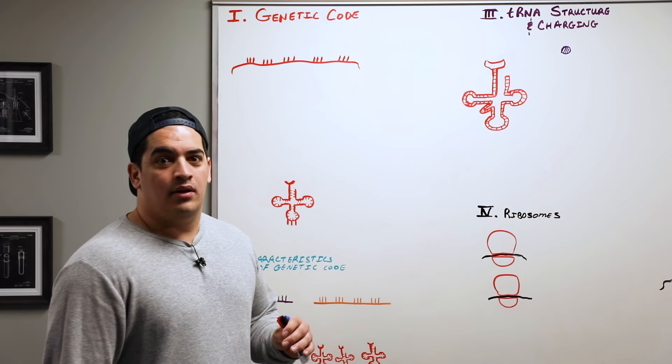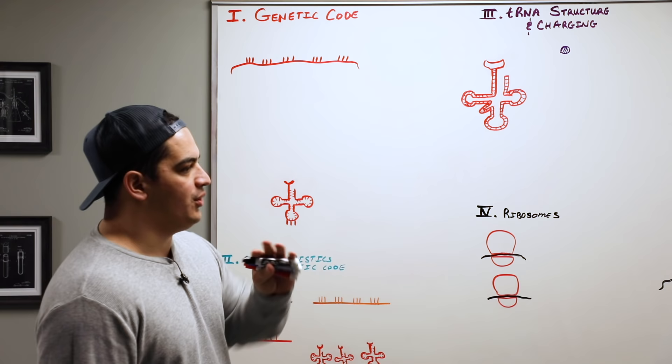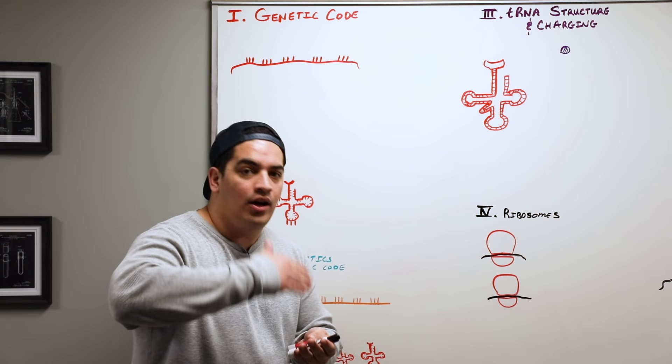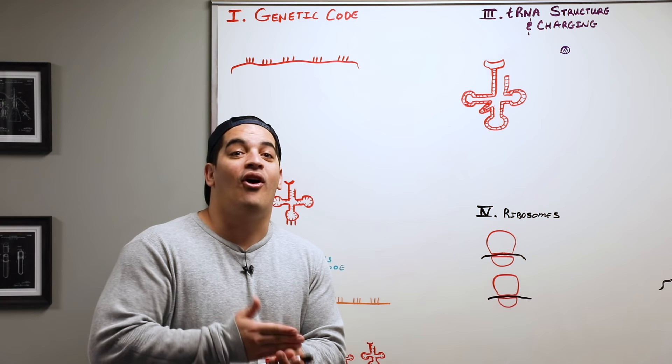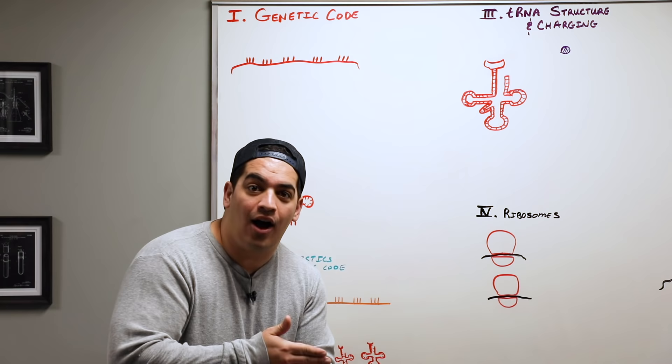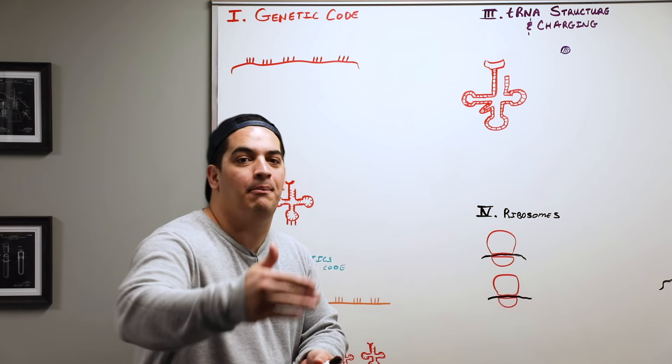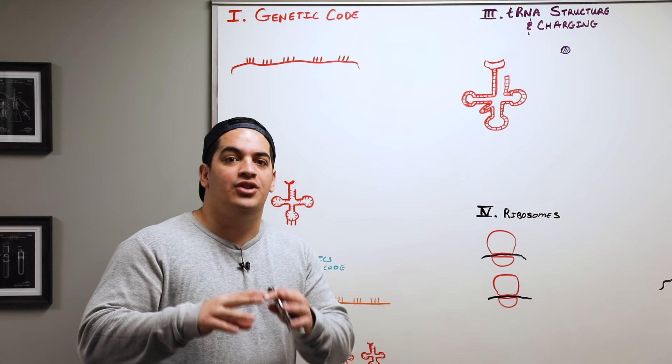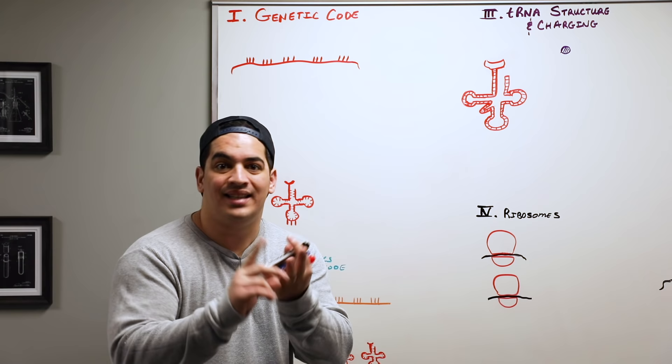Let's start translation. When we talk about translation, the basic definition is you're taking RNA — specifically mRNA — that we made from DNA through the process of transcription, and now we're going to make proteins. That is the process of translation: taking mRNA and making proteins. The three main types of RNA crucial for translation are mRNA, tRNA, and rRNA.